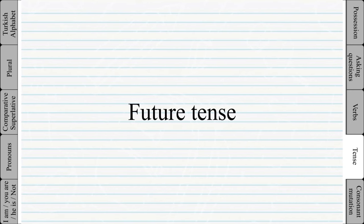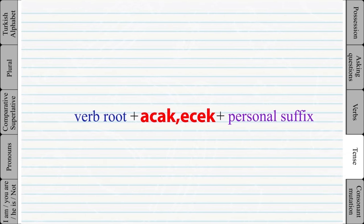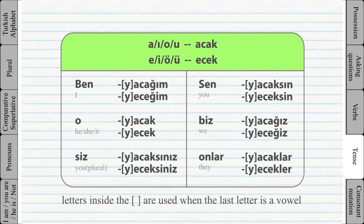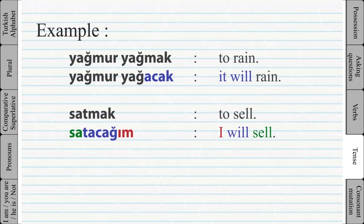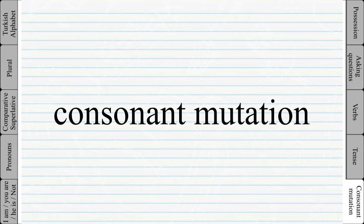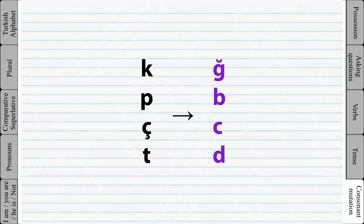Future tense. By now you should have an idea how Turkish grammar works — how by adding a suffix you can change the tense of a verb. The future tense is no exception; the suffix for the future tense is 'acak' or 'ecek'. Now is also a good time to talk about consonant mutation: when a vowel suffix is added to a word ending with one of four specific letters, the last letter of the word will change into another letter.